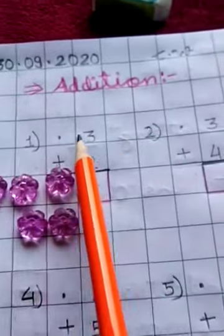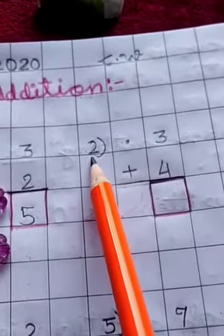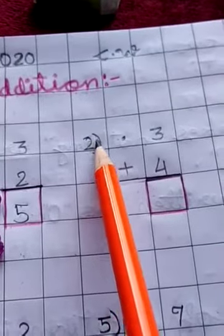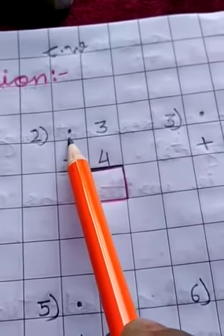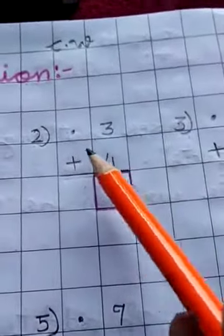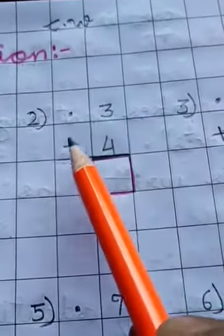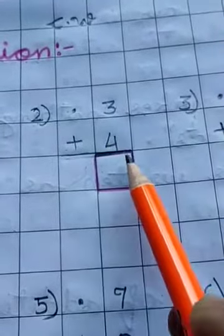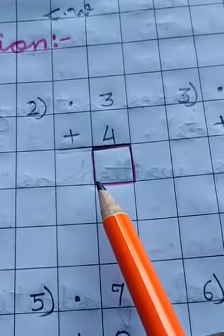Now in this line leave this box. Write 2 here, number 2. Do like this, put a dot here. And your next sum is 3 plus 4. Make a box with red pencil.